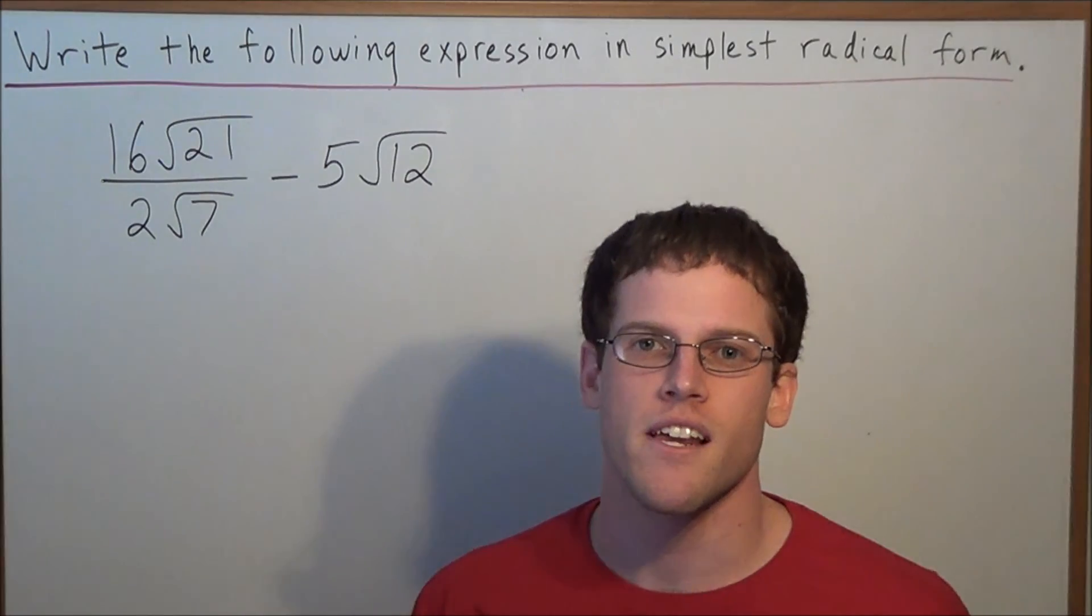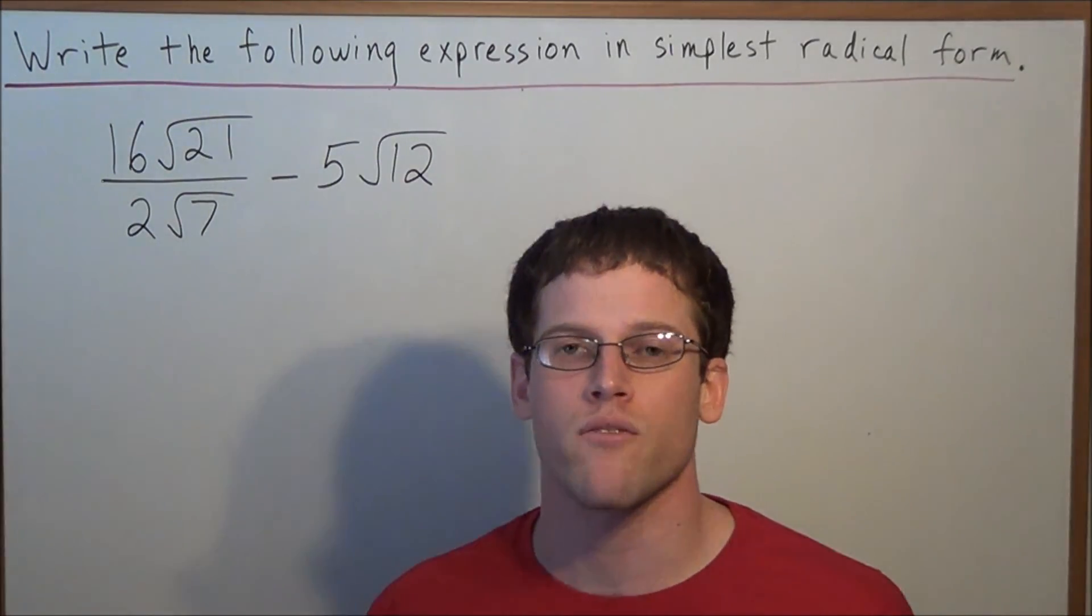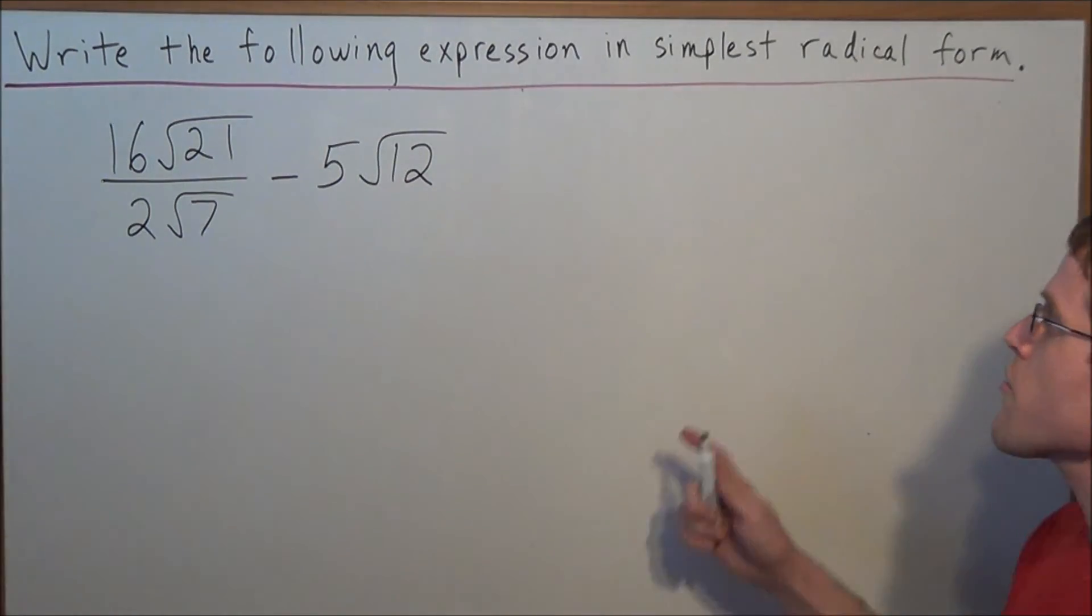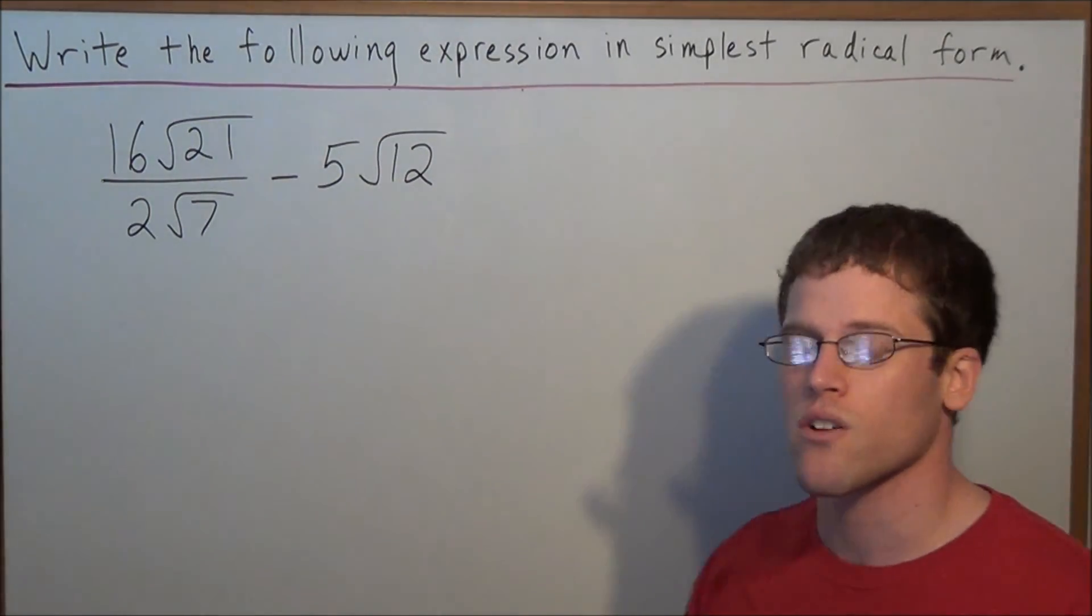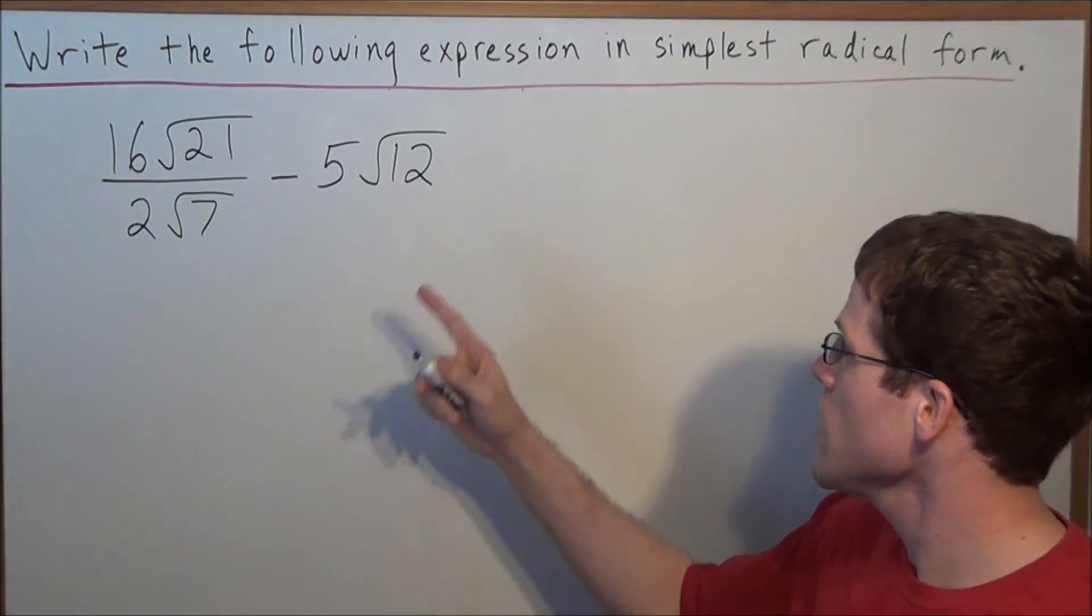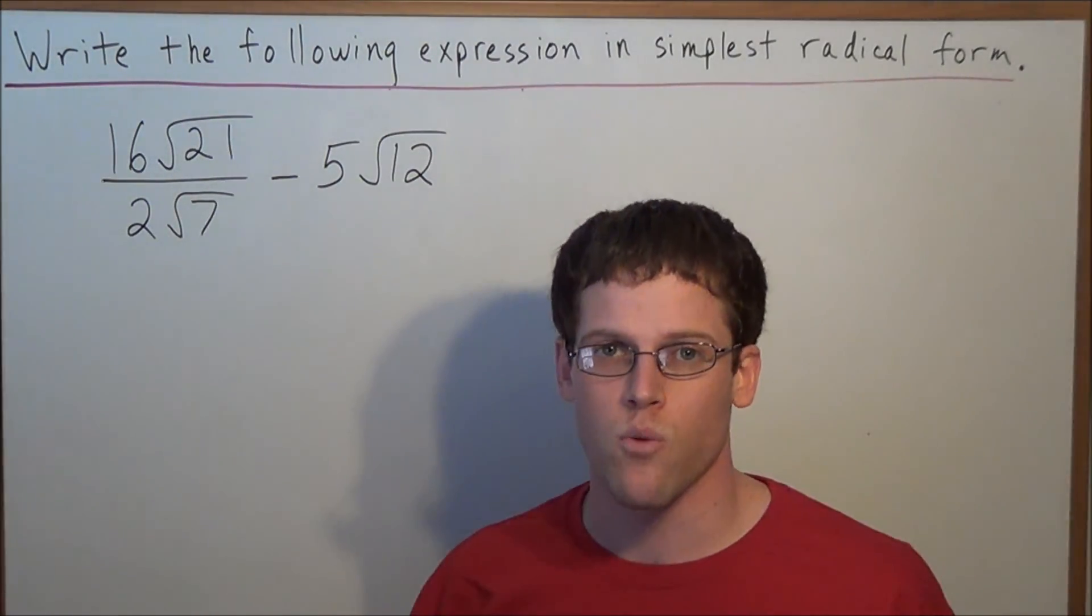Hi, my name is Mr. D, and today I want to take a look at simplifying radical expressions when we have mixed operations. We have write the following expression in simplest radical form, and we're looking at 16 radical 21 divided by 2 radical 7 minus 5 radical 12.